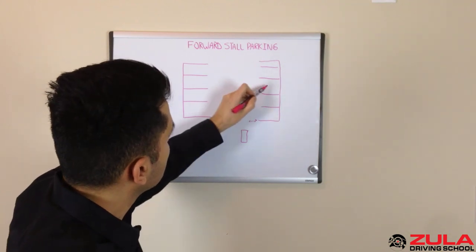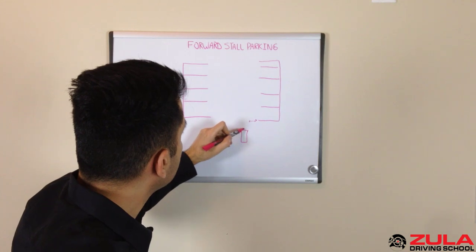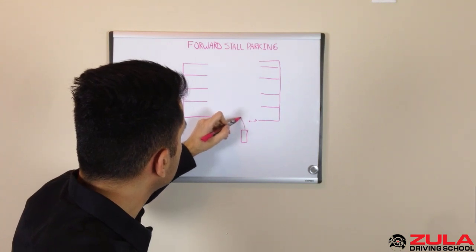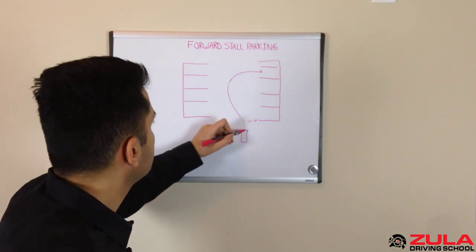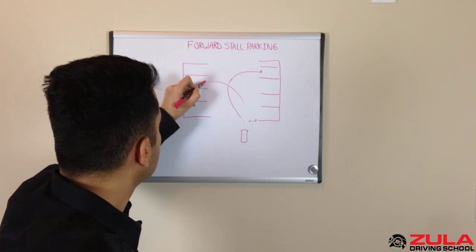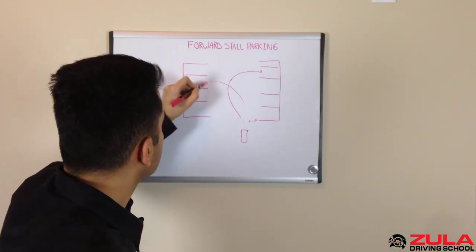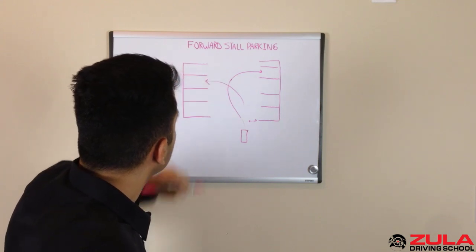What you might see a lot of people do is they kind of swing around like this and then they go in. Alternatively, sometimes you'll see people just pick the parking spot on the other side so that it's easier, they're more lined up if you will to get in here.